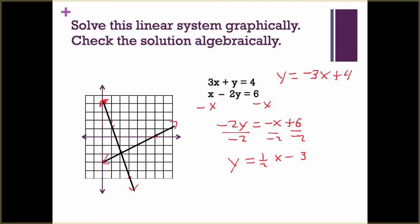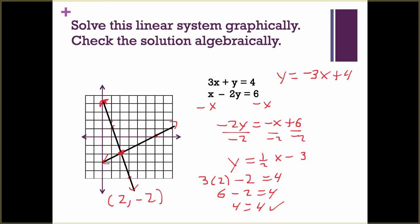Arrows on the ends — don't forget the arrows. You'll see that the lines cross right here, and this point is at (2, negative 2). So we need to say where we cross: at (2, negative 2). Then it says to check the solution algebraically. To check it algebraically, we must plug it into both equations and make sure this point works for both, that it makes both equations true.